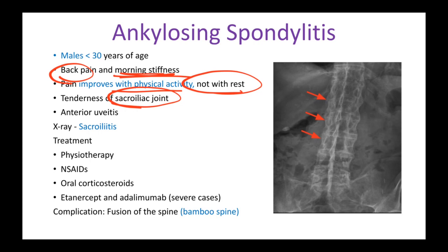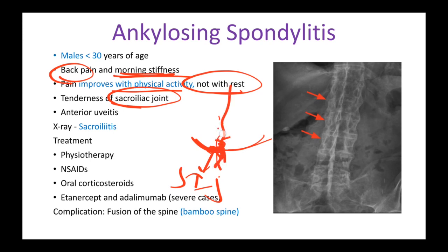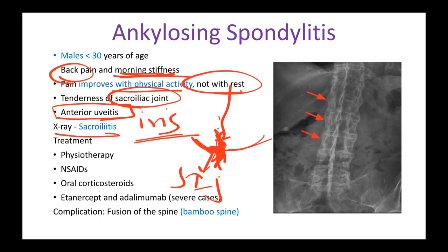There is tenderness of the sacroiliac joint — where the sacrum and the iliac bone of the pelvis come together. Because of continuous back pain, the sacral part of the spine is especially affected. The ongoing inflammation leads to tenderness at the sacroiliac joint. The patient may also have anterior uveitis, meaning the iris is affected. X-ray will show sacroiliitis — inflammation in the sacroiliac joint.